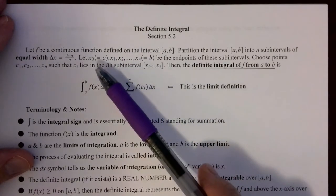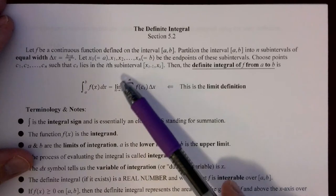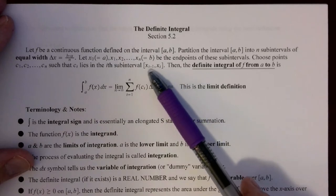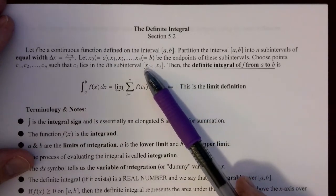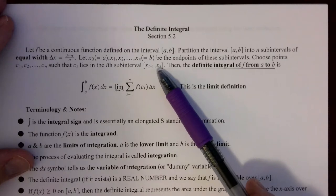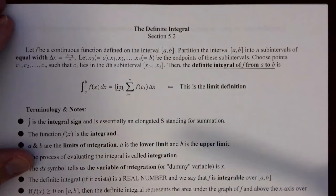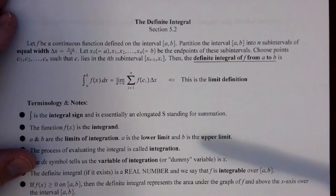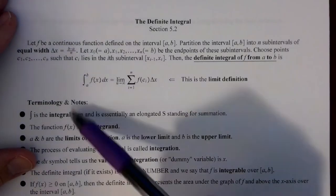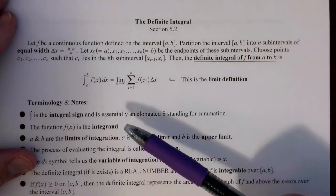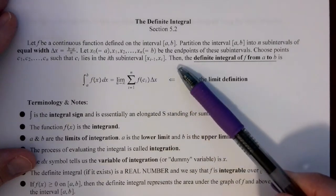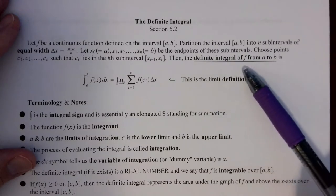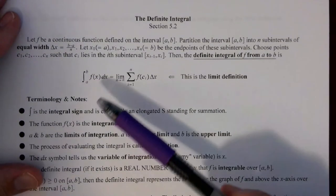For each subinterval, we choose an input value — c1 through cn — such that ci lies in the ith subinterval from x sub i-minus-1 to x sub i. In the first subinterval, c1 could be the left endpoint, the right endpoint, the midpoint, or any point in the interval. We look specifically at left, right, and midpoint summations, as we can choose the ci's to be any of those.